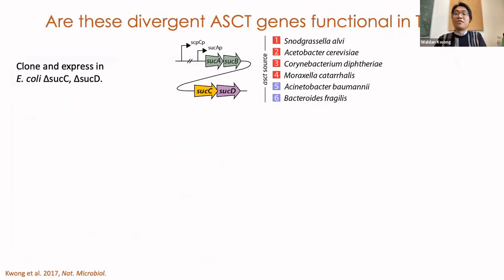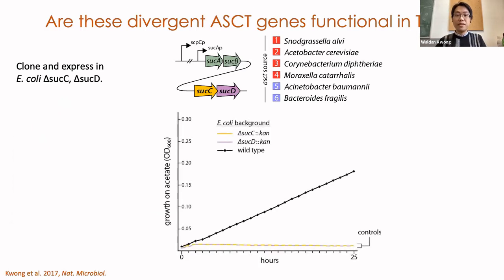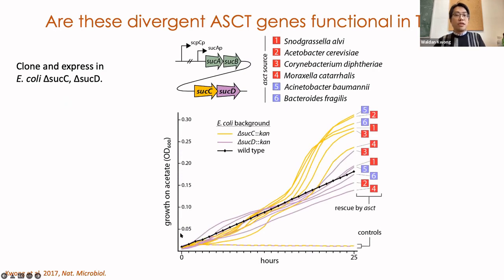So these genes were in Snodgrassella and in these other bacteria — were they fulfilling that missing step in the TCA cycle? To test this, I cloned the ASCT genes from representative strains into an E. coli background and tested if they could rescue TCA cycle function in the absence of succinyl-CoA synthetase. Here are the results: the wild type is in black, with negative controls, and the heterologously expressed ASCT genes — and you can clearly see that all of them are able to successfully rescue TCA cycle function.